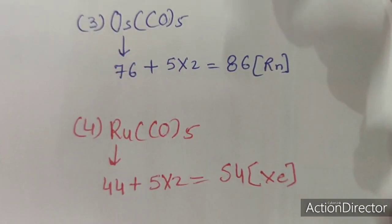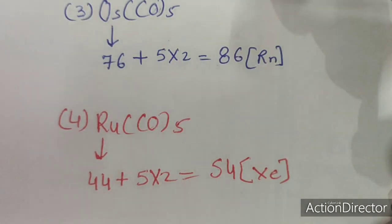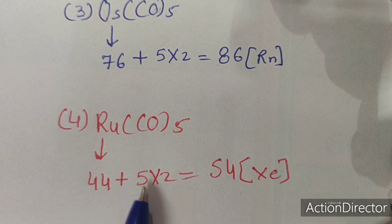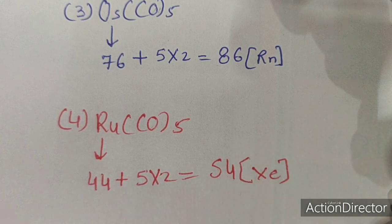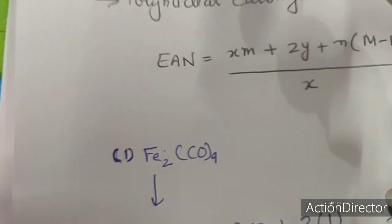Next example is RuCO5, a mononuclear carbonyl. Ru's atomic number is 44, and with 5 ligands it equals 54 — the atomic number of Xe. So it is obeying the EAN rule.